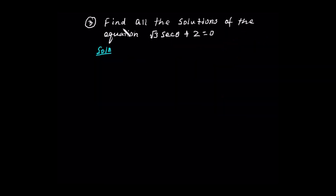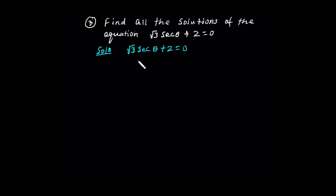Let's take another example: find all the solutions of the equation sec theta plus 2 is equal to zero, from zero to two pi and also for all real numbers.